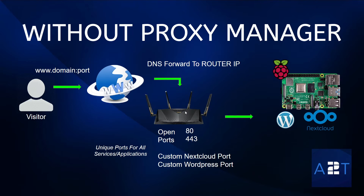Your router will then have port forwarding set up, so if an incoming connection comes in on port 80 it would forward to, say, WordPress, and if it comes in on port 443 — which is SSL/TLS — it would be redirected through to Nginx. So if you were adding more Docker containers with different applications and wanted them accessible from the outside, you'd need a unique port for each application, which leaves your router very insecure. The more ports you have open, the less secure your device is against potential attackers.